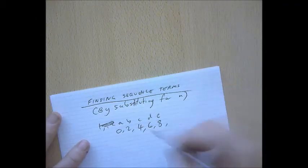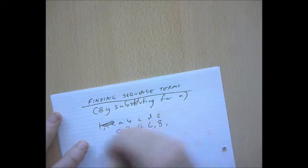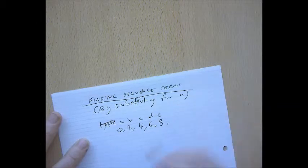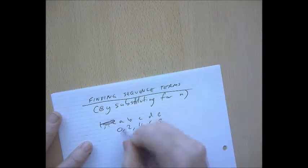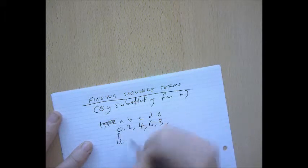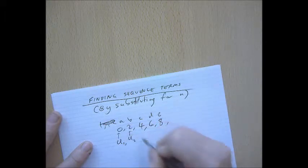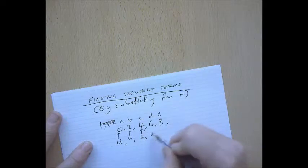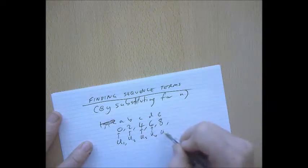And so, what we do instead is we just pick one letter. u is a popular letter, t is another popular letter, and we just name them using subscripts. So, that one could be called u1, that could be called u2, that could be called u3, that could be u4, and that could be called u5.